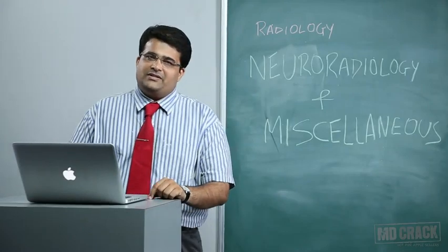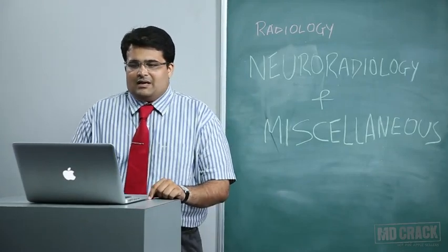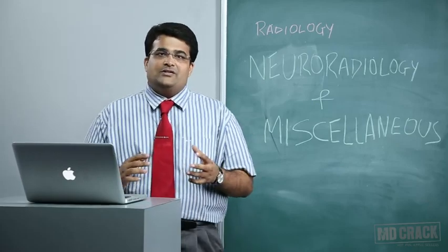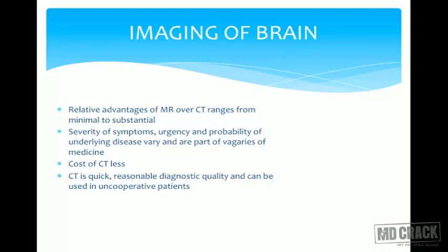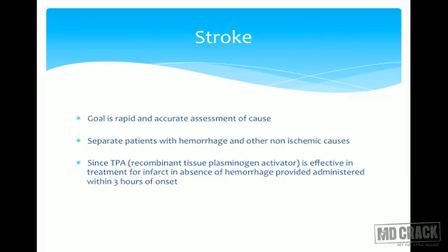We begin with imaging of the central nervous system. There are relative advantages of MRI over CT ranging from minimal to substantial. The choice of imaging depends on severity of symptoms, urgency, and probability of underlying disease. CT has a lower cost, is quick, provides reasonable diagnostic quality, and can be used in uncooperative patients.